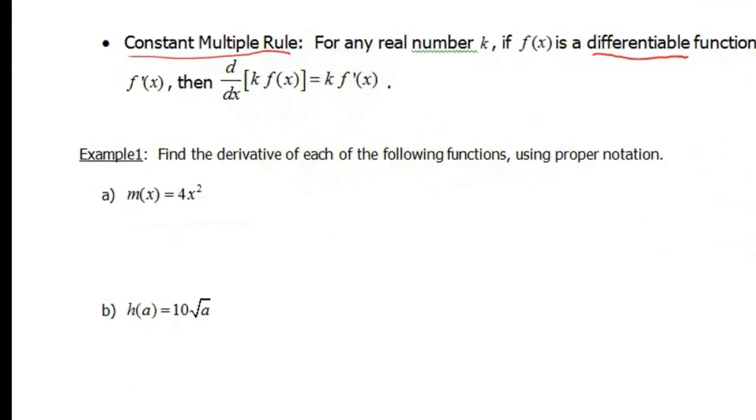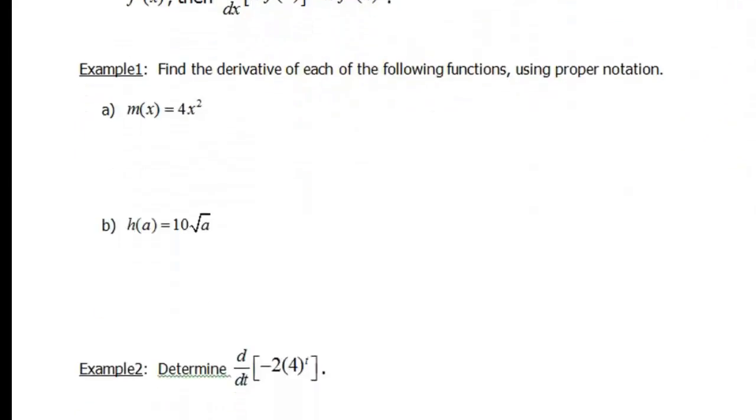Okay, so find the derivative of each of the following functions using proper notation. So we're given m of x is equal to 4 times x squared. So the 4 obviously is a constant that's being multiplied, so in this case that's our k.